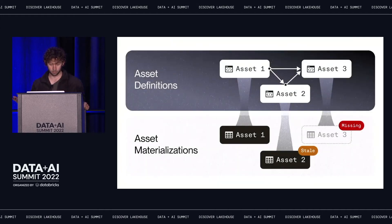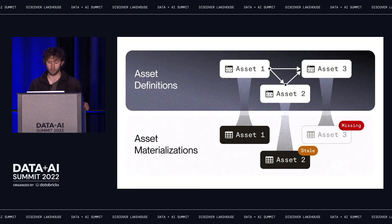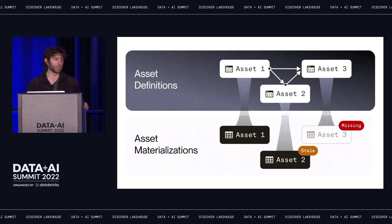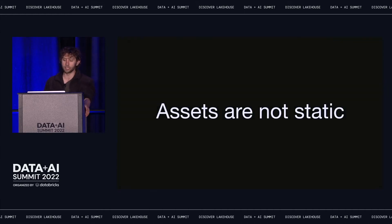So let's summarize what we've seen. Software-defined assets provide a layer above our physical storage that allows us to express what assets we expect to exist and how those assets are produced. The software-defined asset graph is based on assets defined in code, which means practices for managing and evolving code can be harnessed for managing and evolving data. We can launch runs to materialize our assets — computing their contents and writing those contents to physical storage. By focusing tooling on assets instead of tasks, it becomes easy to get visibility into what has happened with the assets we care about.